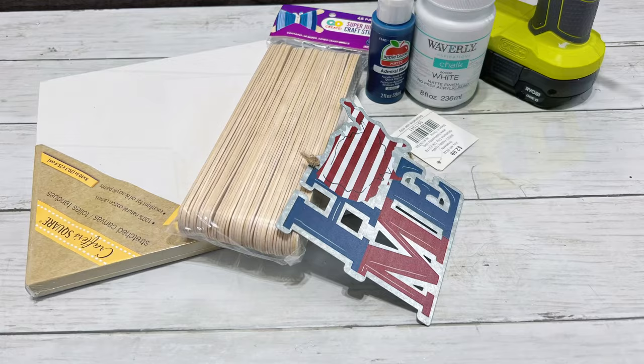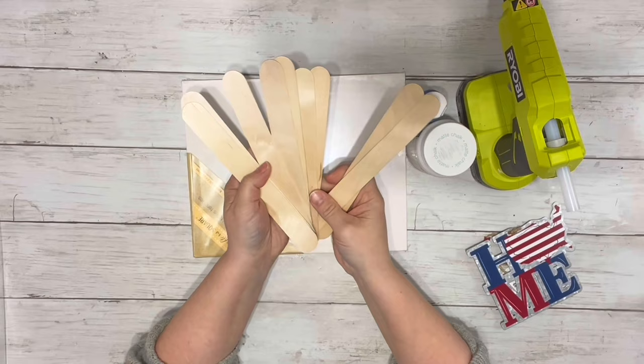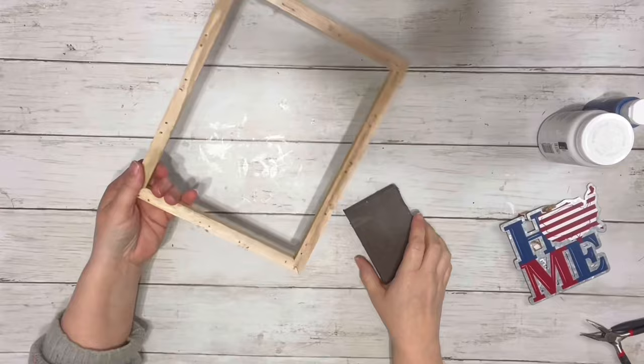I used this little plaque from Hobby Lobby, it was $3. Some super jumbo popsicle sticks, those were from Walmart. I used 14 of them, an 8x10 canvas from Dollar Tree, white chalk paint, and admiral blue acrylic paint, and hot glue.